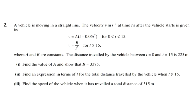Second question. A vehicle is moving in a straight line. The velocity V m/s at time t seconds after the vehicle starts is given by V = A(t − 0.05t²) for 0 ≤ t ≤ 15, and V = B/t² for t ≥ 15, where A and B are constants. The distance travelled between t = 0 and t = 15 is 225 meters.